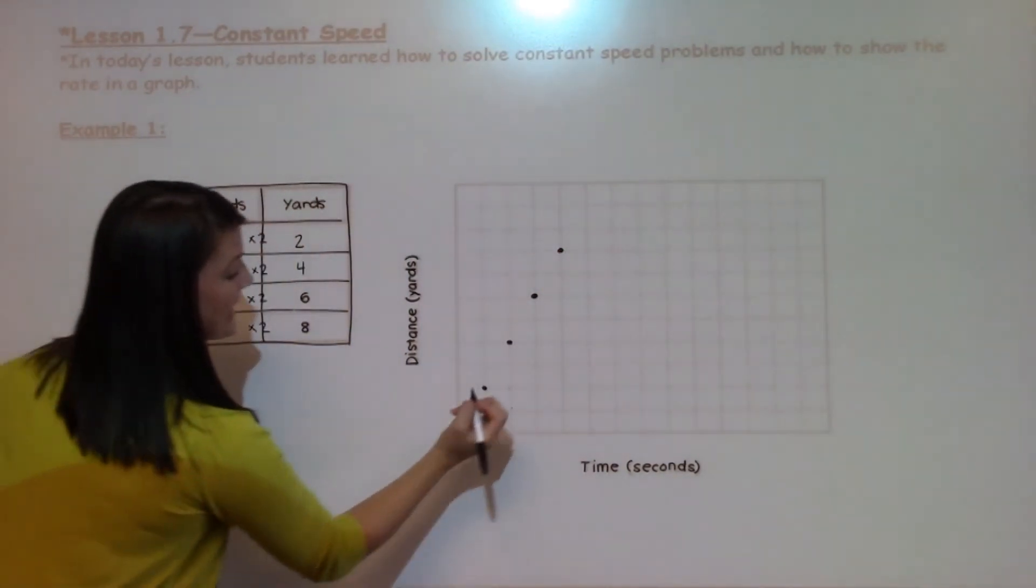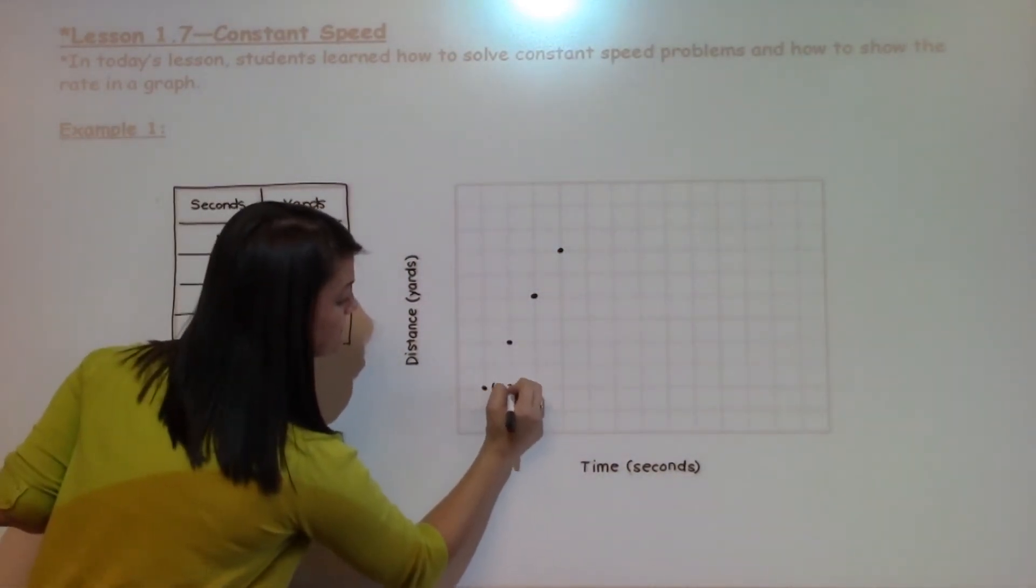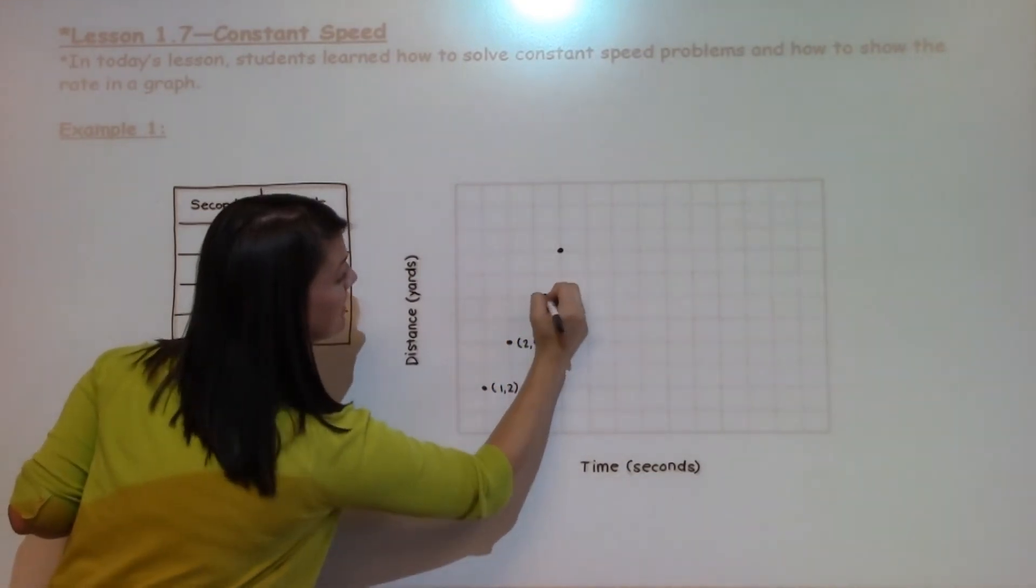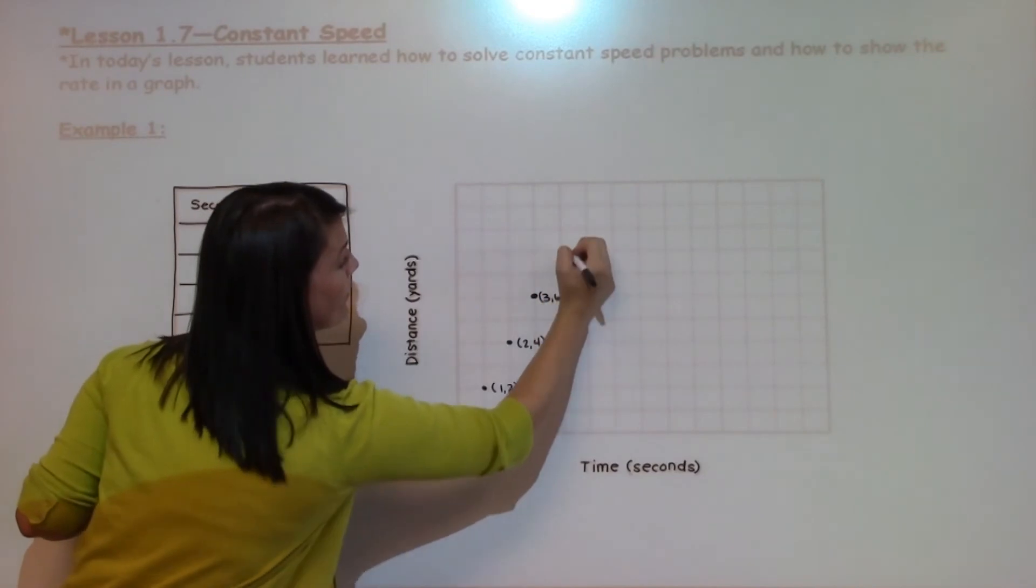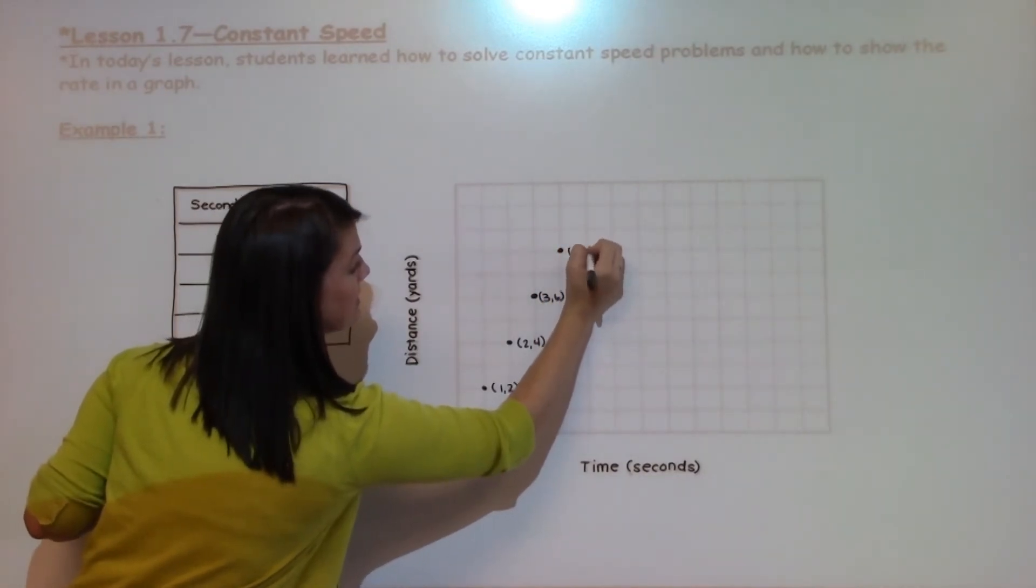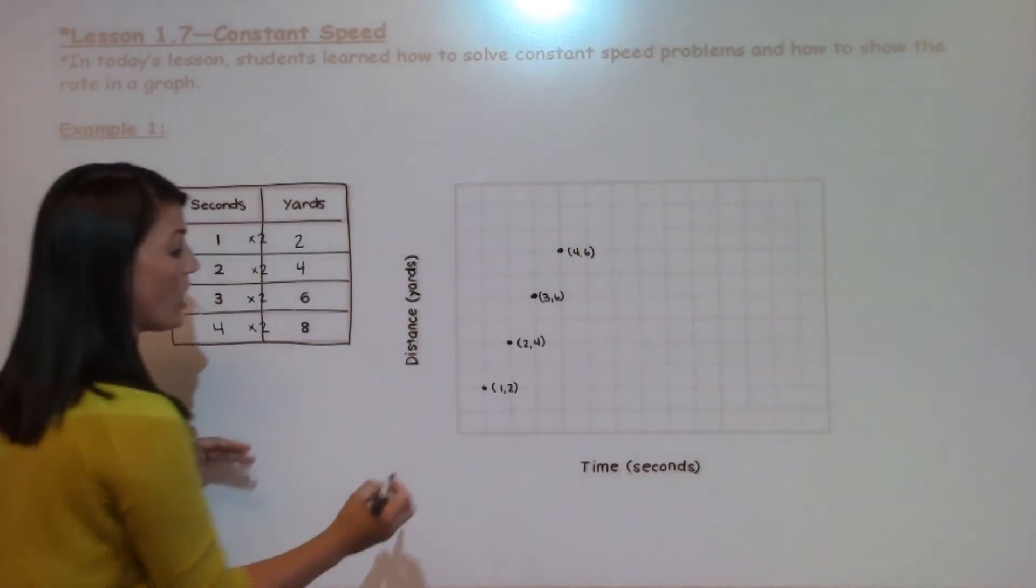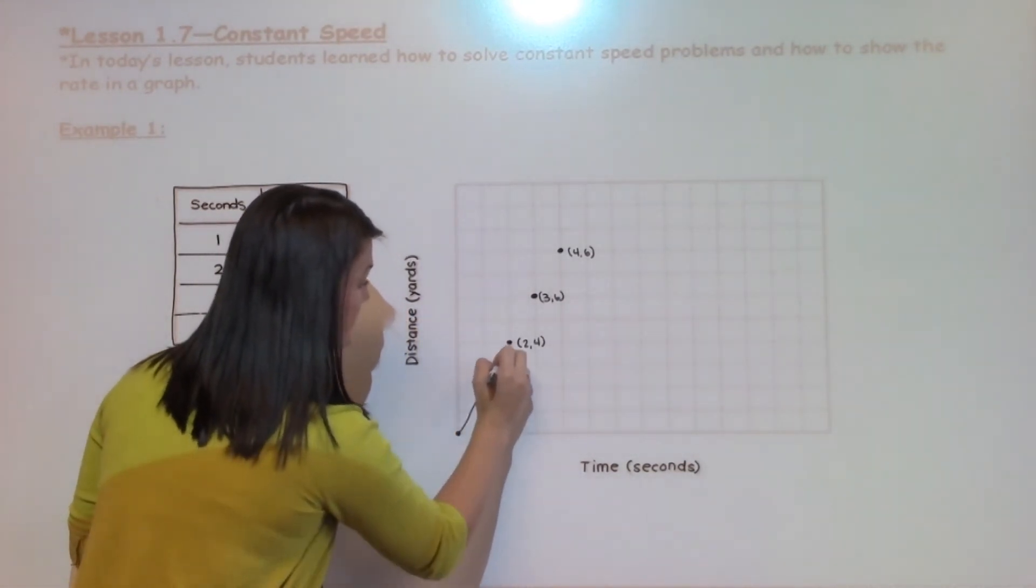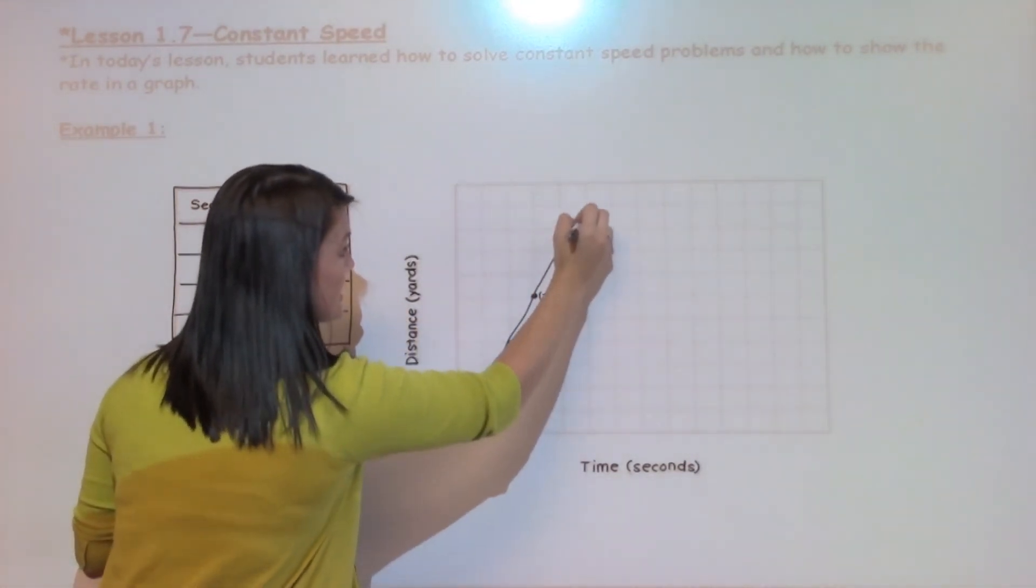When I do this, I could label my points. I am able to see and connect a line. I could also connect and make unit rate triangles if I wanted to see the connection that these numbers have.